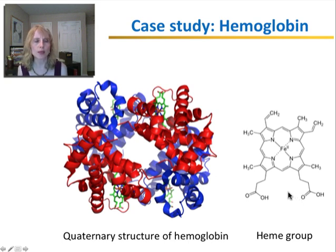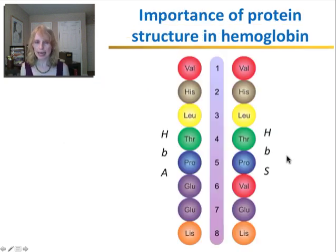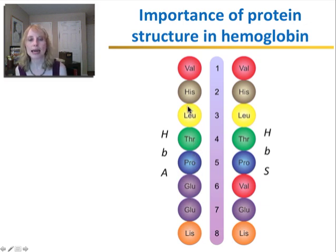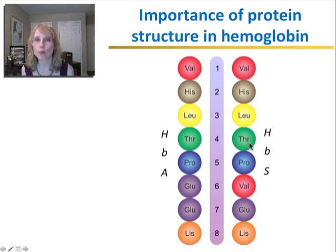The heme group has a central iron, and the iron is what binds the oxygen. Hemoglobin is made up of hundreds of amino acids. Here is just a segment of some of those amino acids — a small portion of the sequence that makes up hemoglobin. On one side we have the normal sequence, and on the other side is the abnormal or mutant sequence of a particular mutation, where just one amino acid is changed.